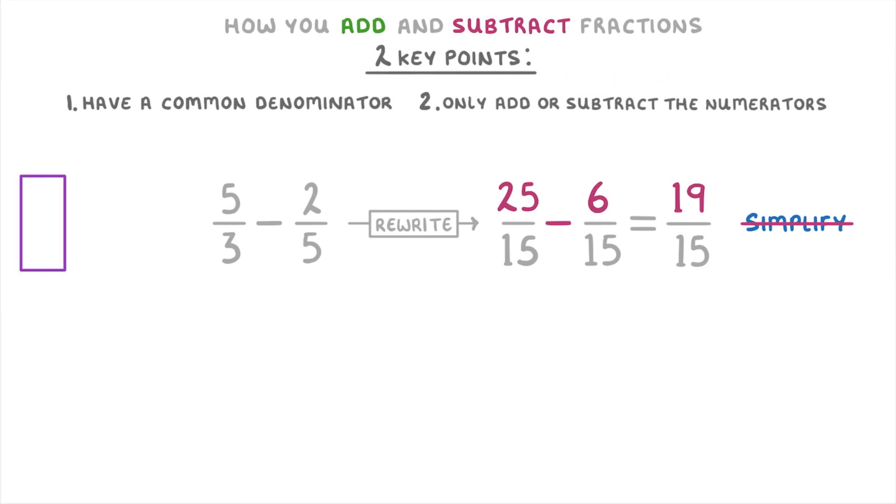In case you didn't notice, 5/3 is an improper fraction because the numerator is bigger than the denominator, but this doesn't matter at all when you're adding or subtracting fractions. We just treat it like any other fraction. If we'd been given it in a mixed number form though, so 1 and 2/3, then we'd have needed to convert it into its improper fraction form first.